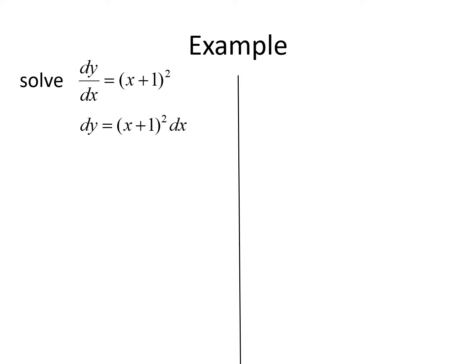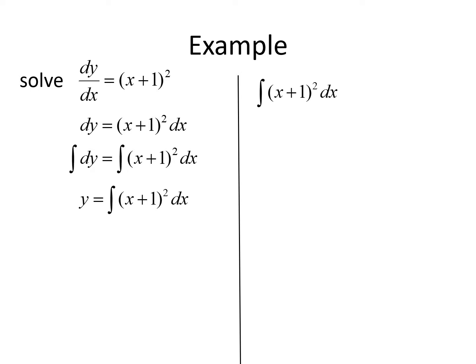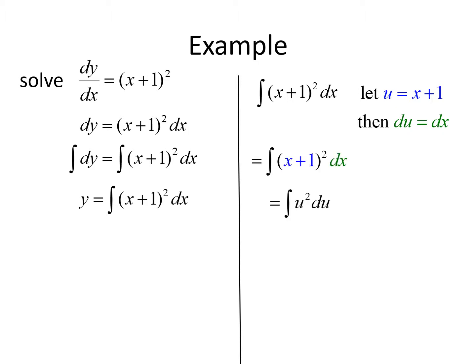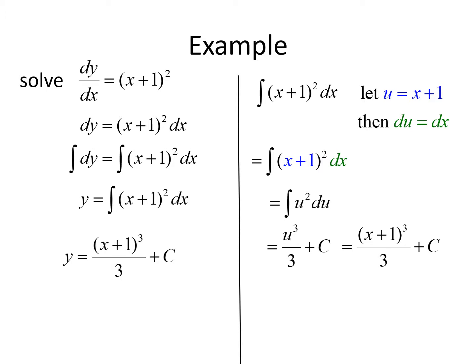Now that everything's separated, we'll integrate both sides: the integral of dy equals the integral of x plus one quantity squared times dx. To integrate x plus one squared, we use u substitution. Let u equal x plus one, so du equals dx. This becomes the integral of u squared du, which gives us u cubed over three plus c. Substituting back, we get y equals x plus one cubed over three plus c. That's the explicit solution for our problem.